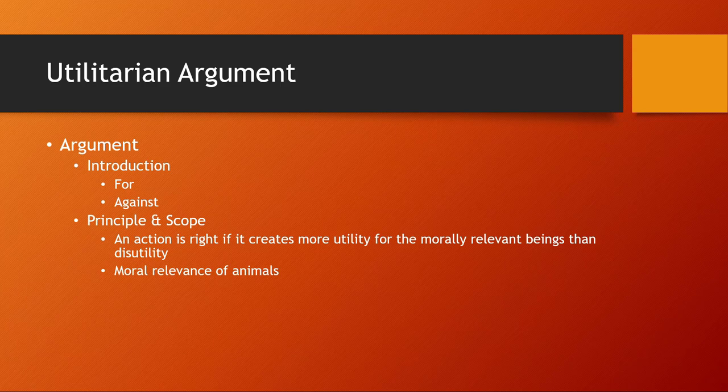Now, John Stuart Mill, when he discussed the scope of morality — that is to say, who counts morally — he was willing, in a somewhat unusual move, to extend that to all of humanity. And the unusual part is he was willing to extend it to all of sentient creation, creatures that can feel pleasure and pain.